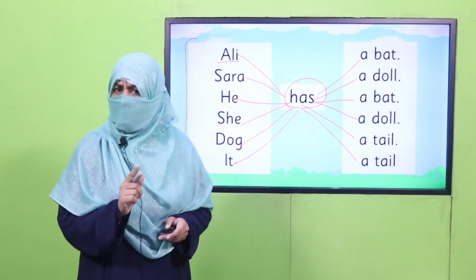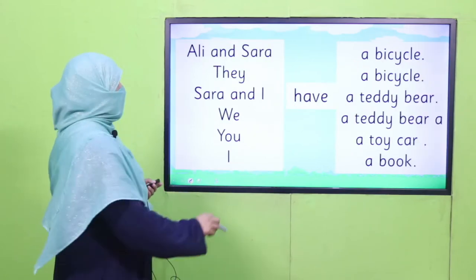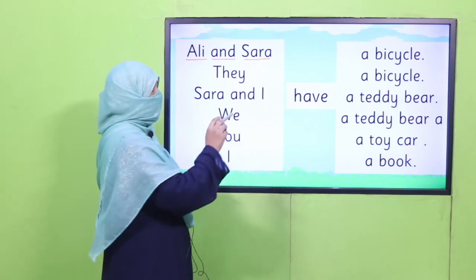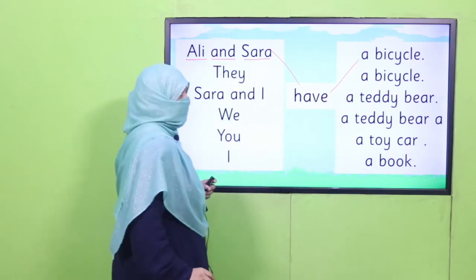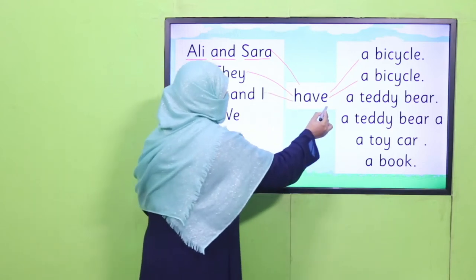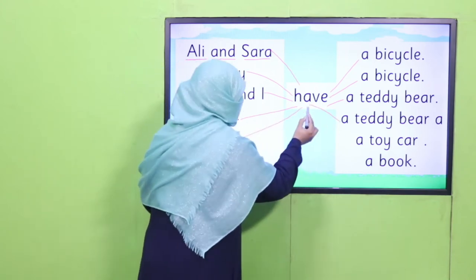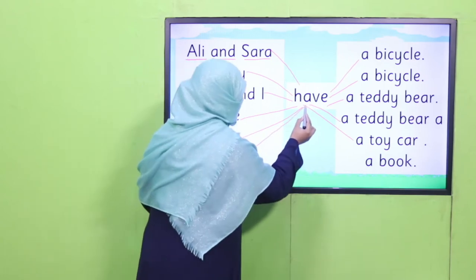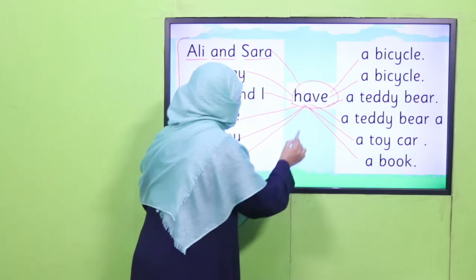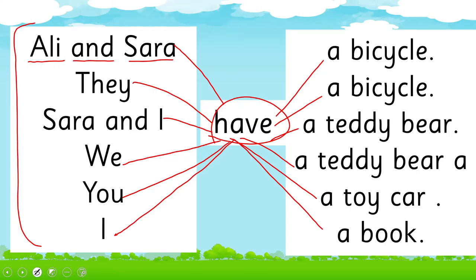Yes, my dear children. Are you done with practicing has? Now it's time to practice have. Where do we use have? Ali and Sara — because they are plural naming words, they are more than one — have a bicycle. They have a bicycle. Sara and I have a teddy bear. We have a teddy bear. You have a toy car. And I have a book. These are the naming words with which we use have. Now, pause the video and practice where to use have.